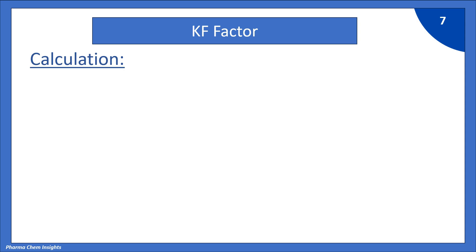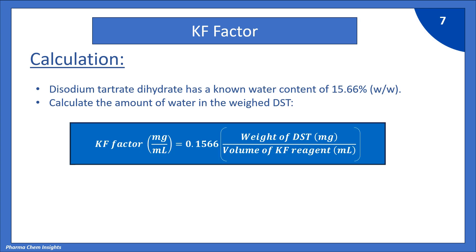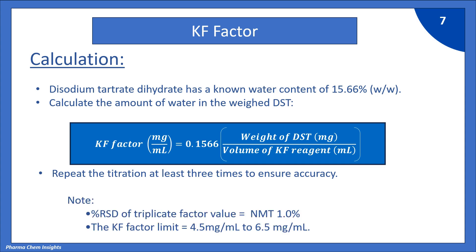Now, let us move on to the calculation part. We know that disodium tartarate dihydrate has a known water content of 15.66% w/w. Calculate the amount of water in the weighed DST. This is the formula for KF factor: KF factor (mg/ml) = 0.1566 × weight of DST (mg) ÷ volume of KF reagent (ml). Here, 0.1566 is the factor for DST. Repeat the titration at least 3 times to ensure accuracy. Note that the percentage RSD of duplicate KF factor values should not be more than 1%. Also, the KF factor limit should be between 4.5 mg/ml to 6.5 mg/ml.